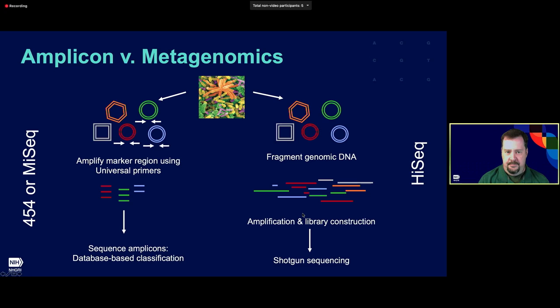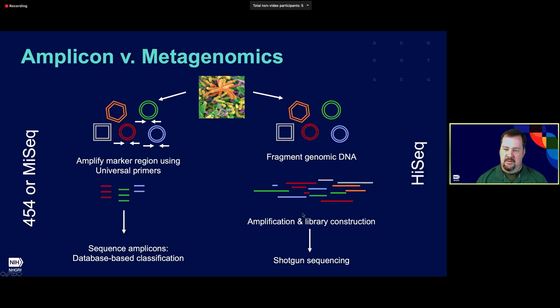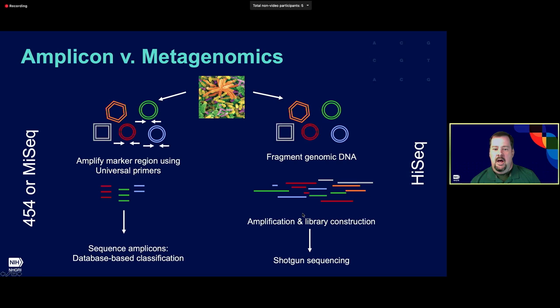Metagenomics, shown on the right, is a lot more comprehensive — more expensive and more difficult to analyze, but you get everything. Instead of just sequencing marker genes, we shear up all the DNA in the sample into small pieces and sequence all of it. What you get out is like mixing multiple jigsaw puzzles together — lots of pieces that must be sorted computationally. A big advancement in the field right now is taking these heavily fragmented DNA samples and putting bacterial genomes back together to get what are called MAGs, or metagenome-assembled genomes. Most of what I'll talk about today is just asking what genes are there and what bacteria are present.